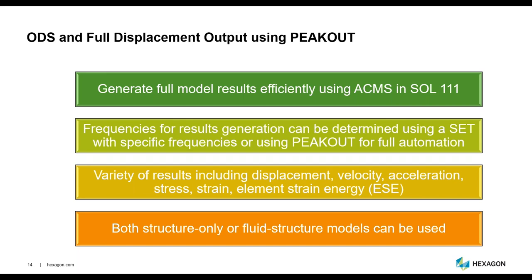An alternative would be to run a direct frequency response in Solution 108 separately, but this can also be exceedingly time consuming for large models. So in the latest versions, we introduced a novel approach leveraging ACMS to retrieve full model results without the necessity of obtaining the entire eigenvectors. We also implemented enhancements to the PeakOut functionality — an existing feature in MSC Nastran — which allows Nastran to automatically identify the peak frequencies at which ODS results should be recovered. This integrated approach requires no new subcases, and results such as displacements, velocities, and accelerations can be obtained.